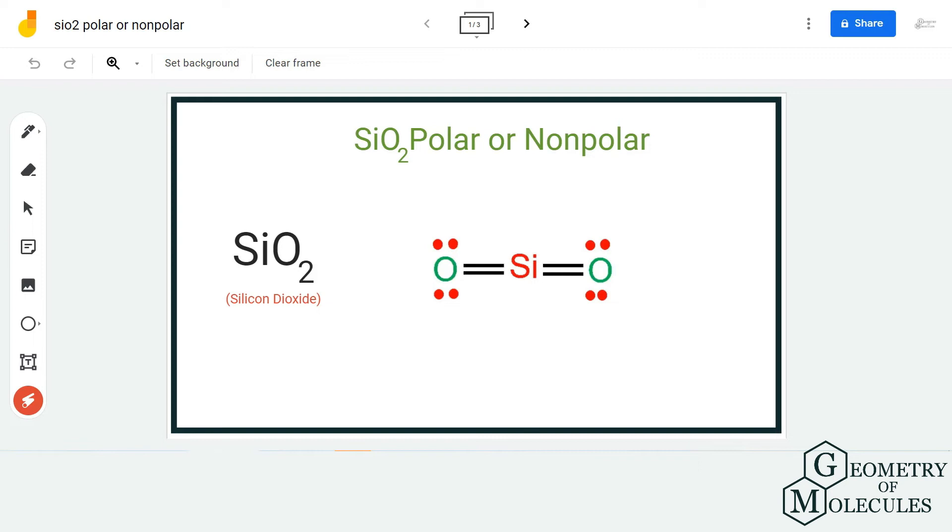Hi guys, welcome back to our channel. In today's video we are going to help you determine the polarity of SiO2 molecule. To start, you first need to know the Lewis structure of SiO2, followed by its shape, and then we check if the bonds are polar and if there is a net dipole moment in this molecule.